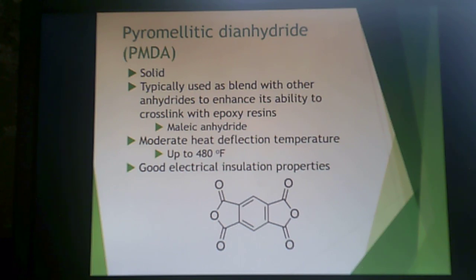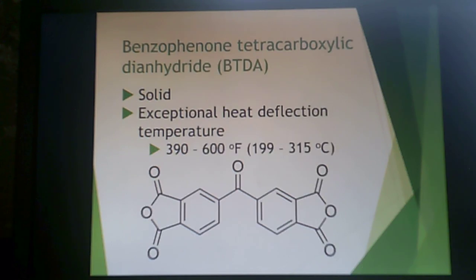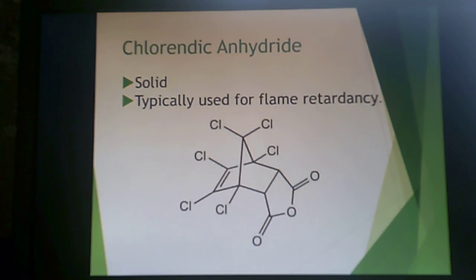Pyromellitic dianhydride provides moderate heat deflection temperatures and good insulation properties. Benzophenone tetracarboxylic dianhydride (BTDA) is a solid that provides exceptional heat deflection temperature — up to 600°F (315°C) in the resulting resin. Chlorendic anhydride is a solid typically used for flame retardancy; as with other systems, whenever you see a halogen incorporated, that's usually for flame retardancy.